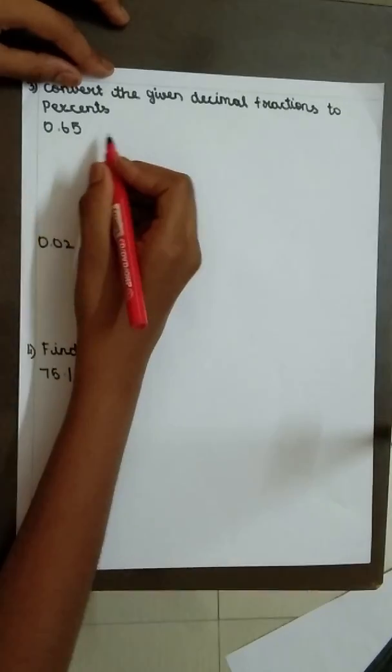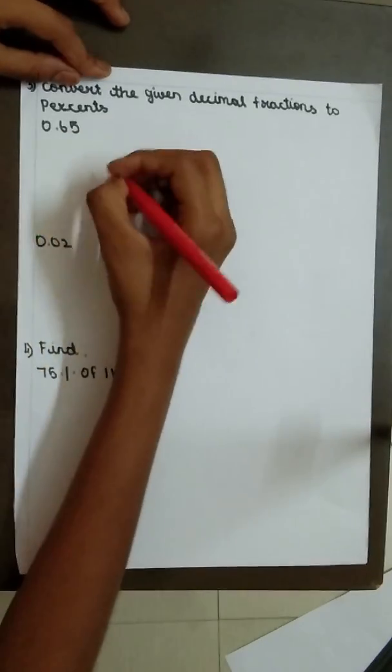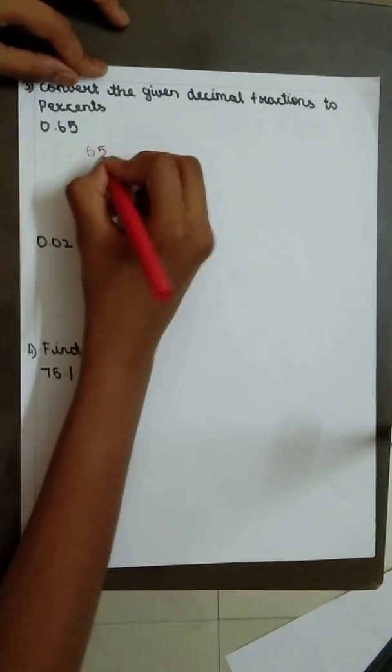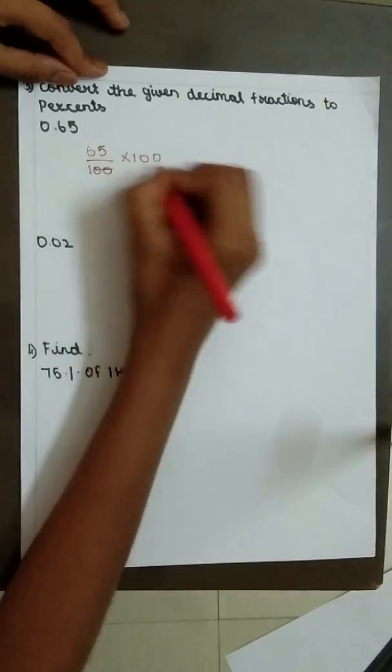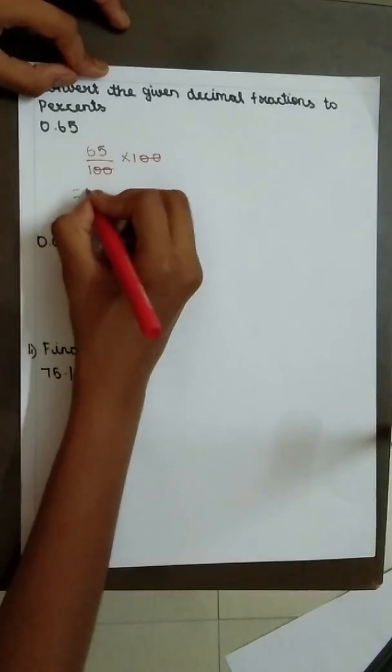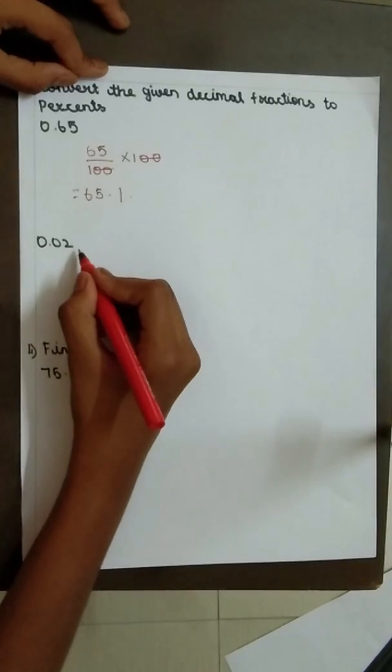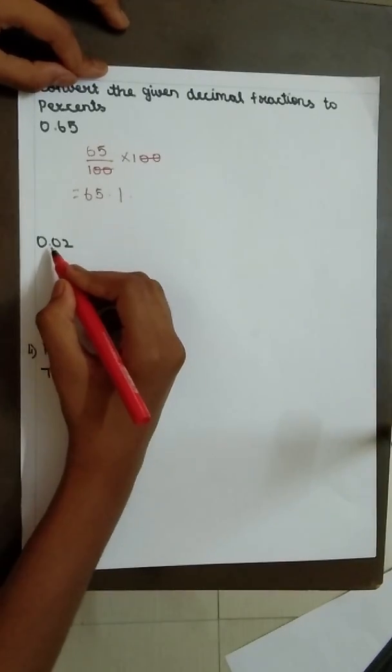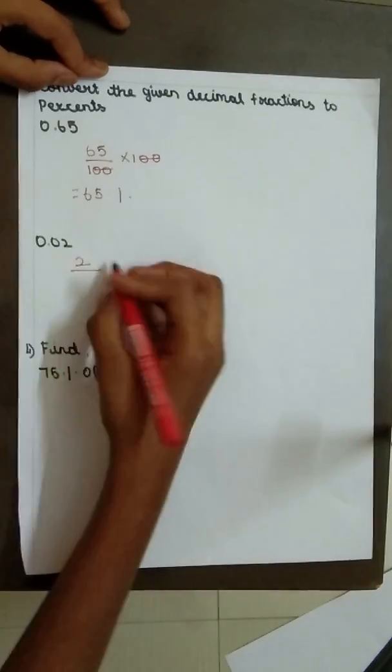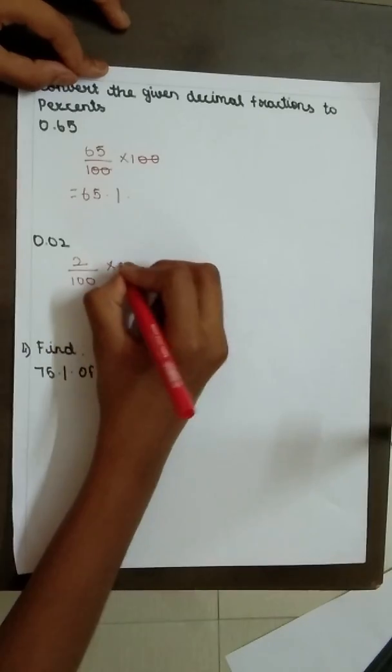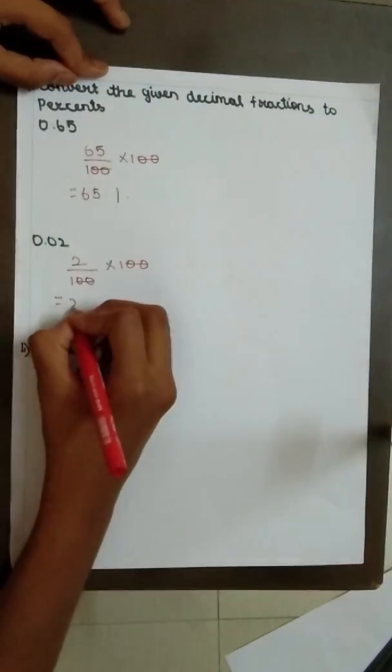Question number 3. Convert a given decimal fraction to percent. 0.65. After decimal point, there are 2 digits. So 65 by 100 into 100. 100s get cancelled. The answer is 65%. 0.02. Even in this question, after decimal point, 2 digits are there. So 2 by 100 into 100. 100s get cancelled. And the answer is 2%.